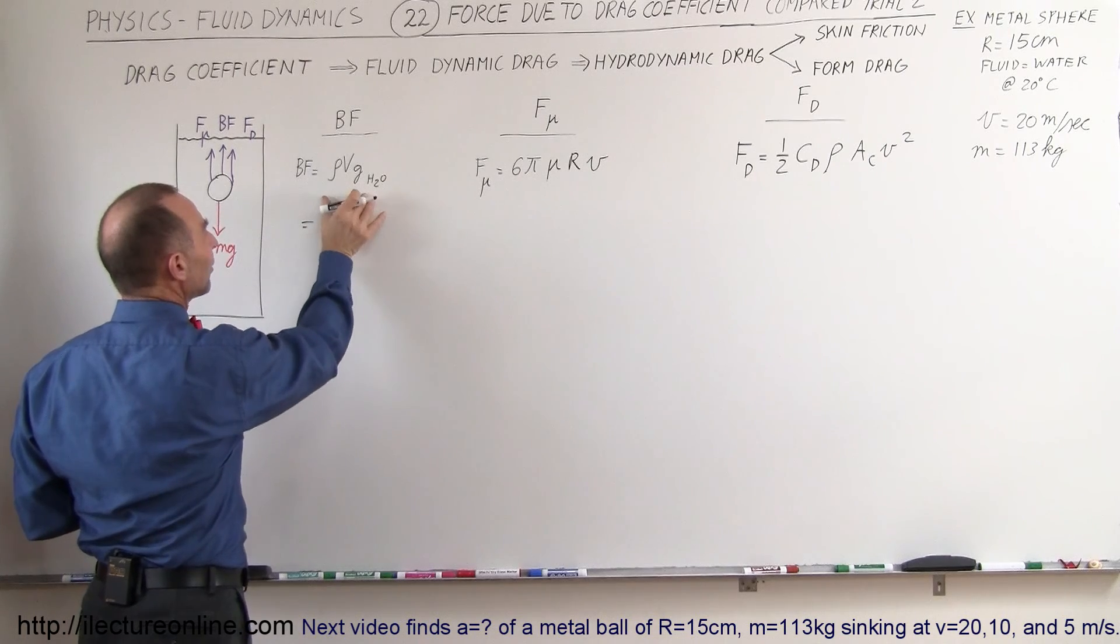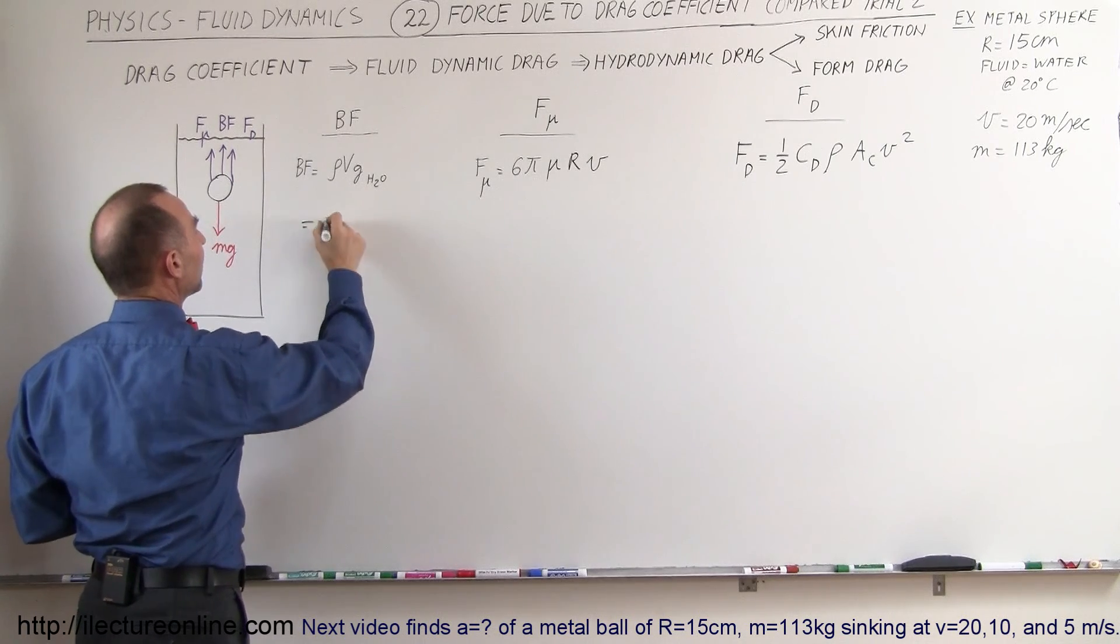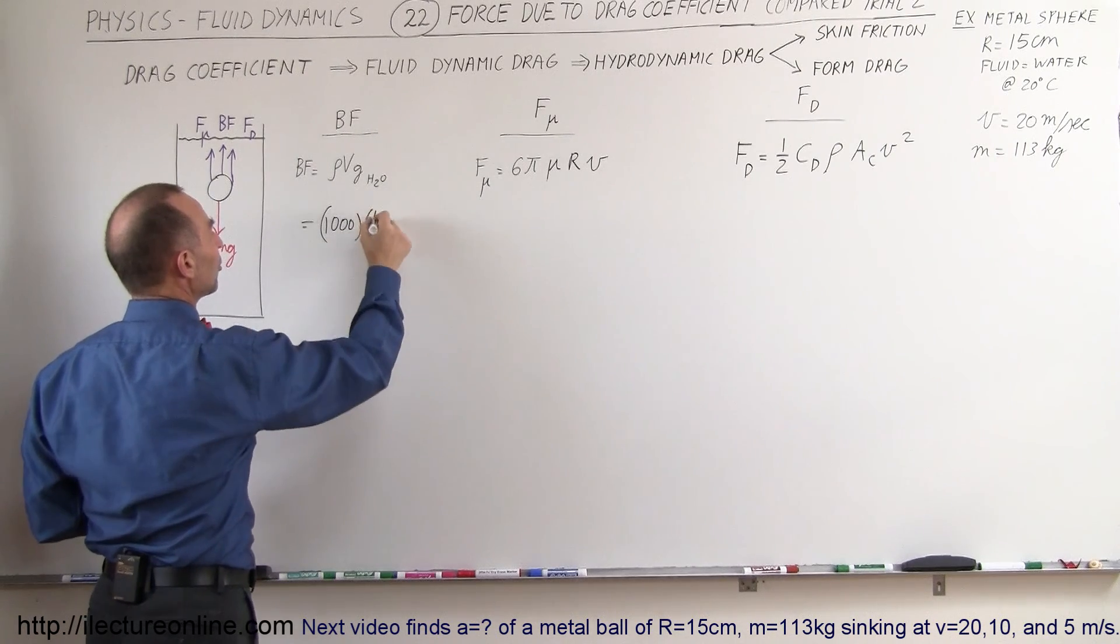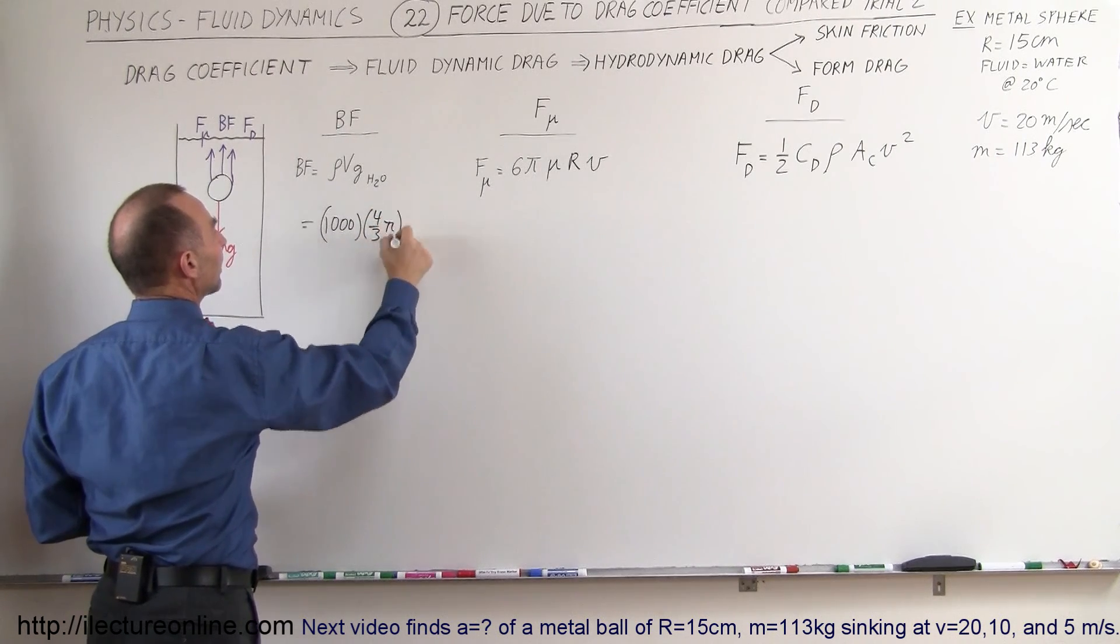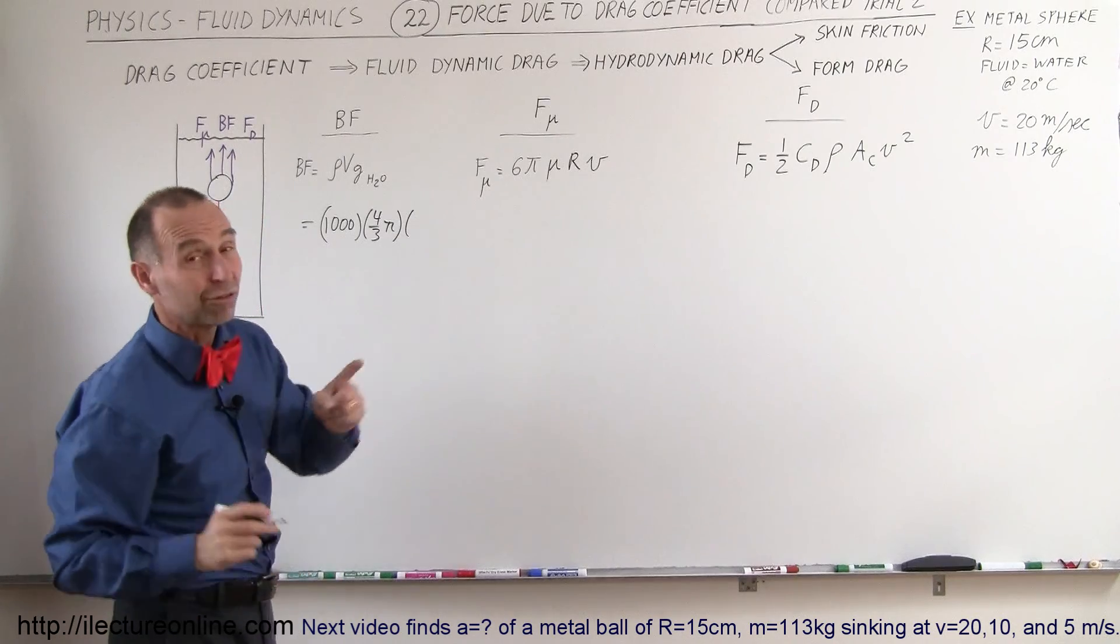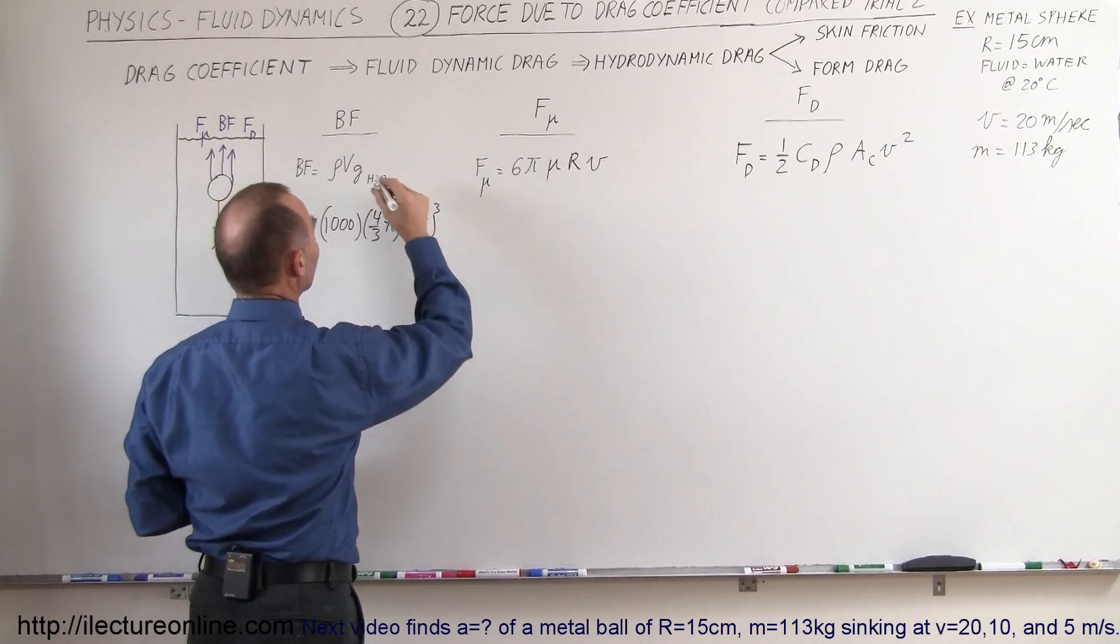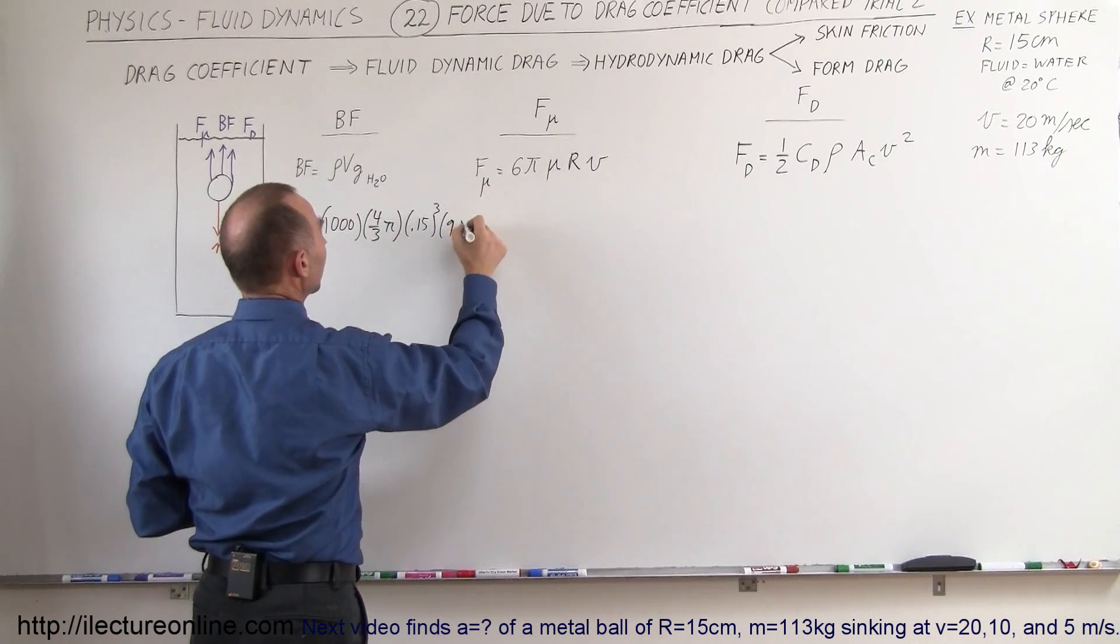The buoyancy force will be equal to the weight of the liquid displaced, so it would be the density of the liquid times the volume of the sphere, which would be 4/3 π times the radius cubed. The radius is 15 centimeters, so it's 0.15 cubed, and then of course g is 9.8.